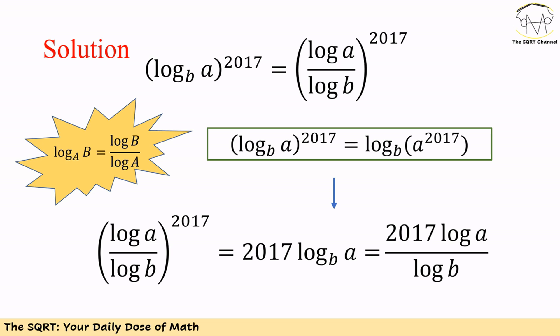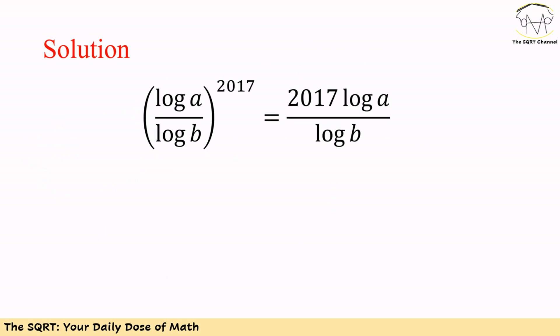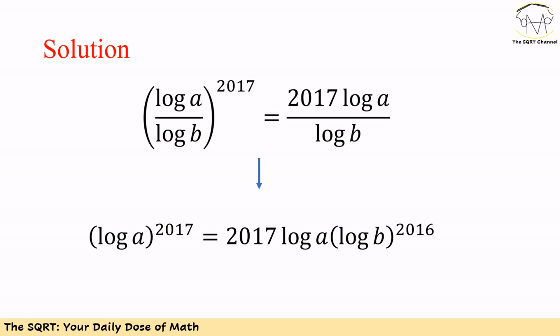After these simplifications, we have log A over log B to the power of 2017 is equal to 2017 times log A over log B. To simplify further, we keep log A to the power of 2017 on the left side and multiply both sides by log B to the power of 2017.